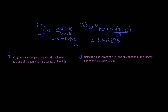So, what is this question asking? It says: using the results of part A, guess the value of the slope of the tangent line to the curve at P. And so we could guess the slope to be pi.